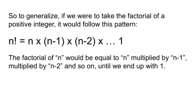So to generalize, if we were to take the factorial of a positive integer, it would follow this pattern. The factorial of n would be equal to n multiplied by n minus 1, multiplied by n minus 2, and so on until we end up with 1.